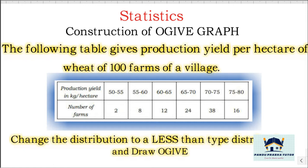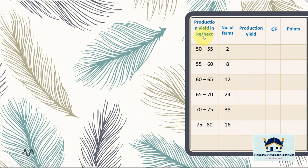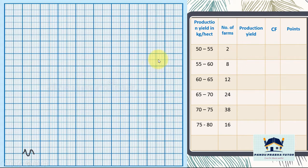Solution. First we have to write the table: production yield in kg per hectare, number of farms is given. Since we are taking less than type, we have to take upper limit: less than 55, less than 60, less than 65, less than 70, less than 75, less than 80.